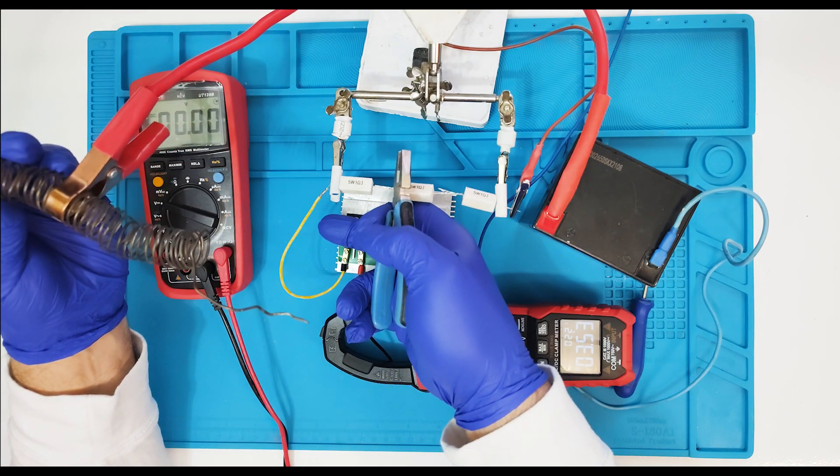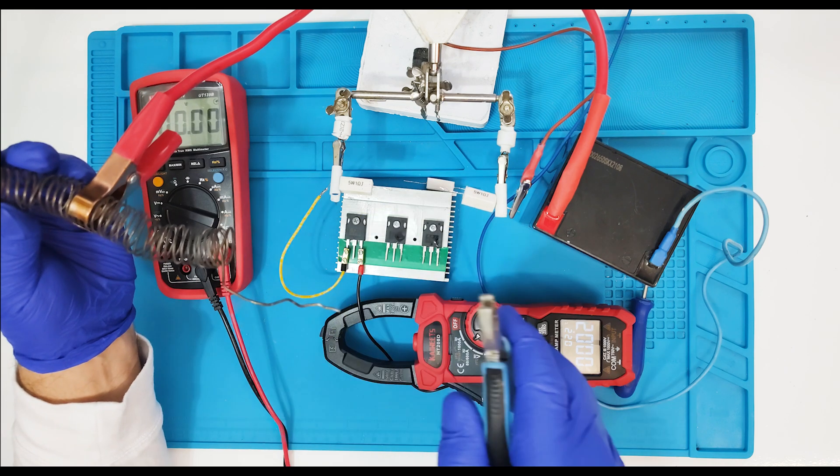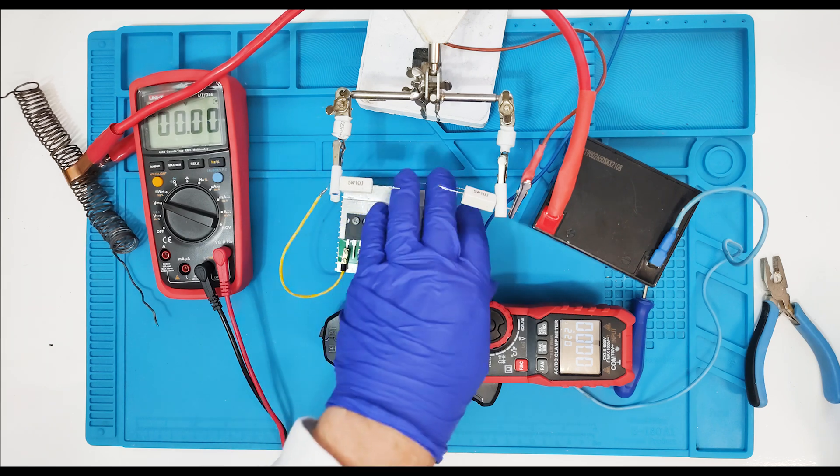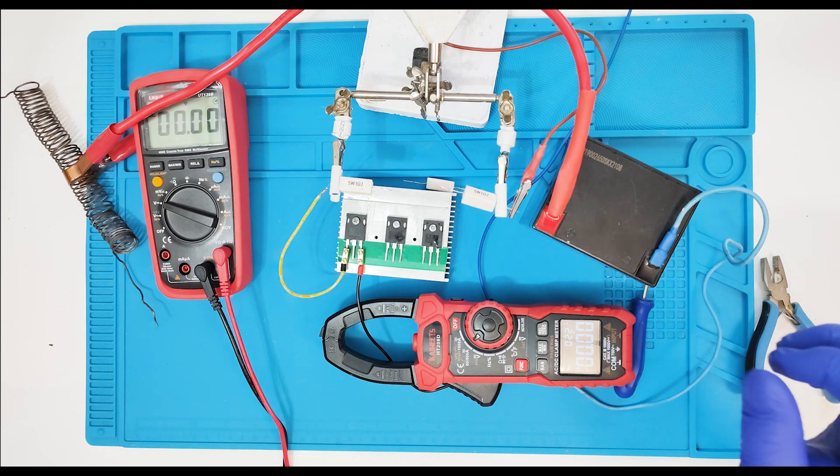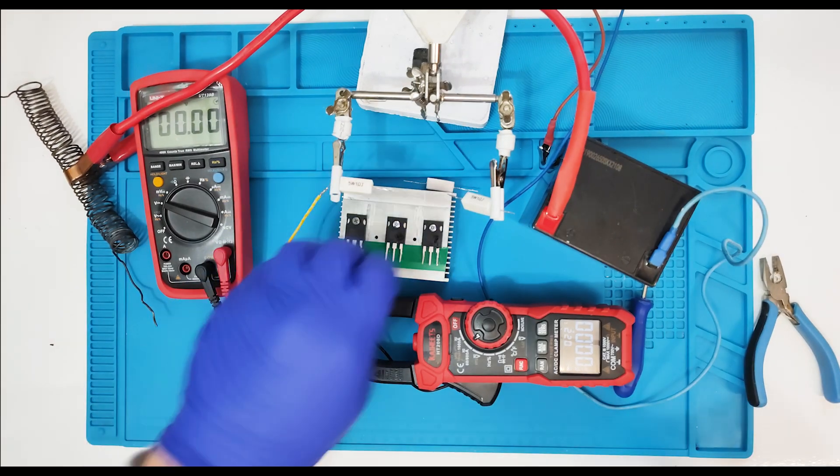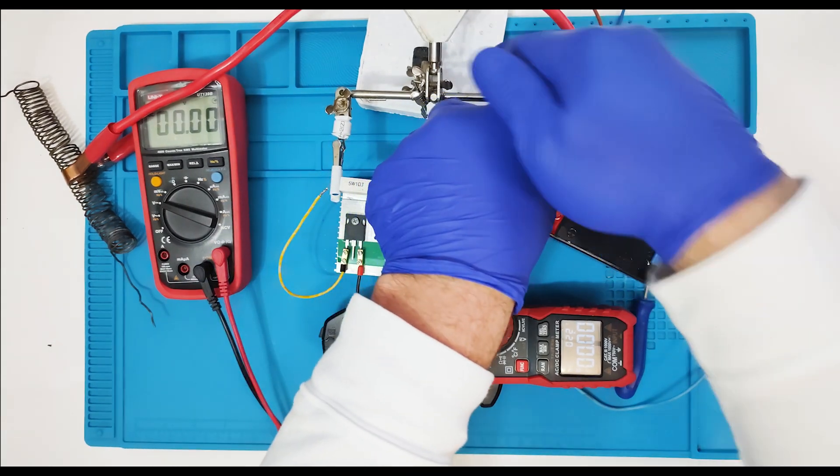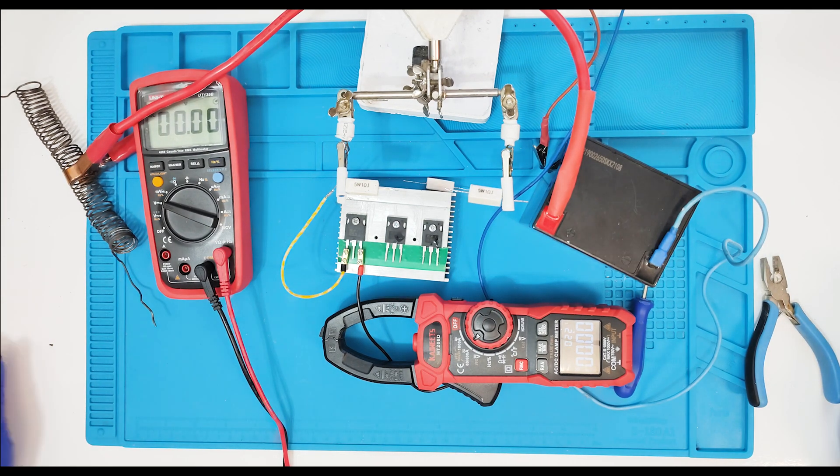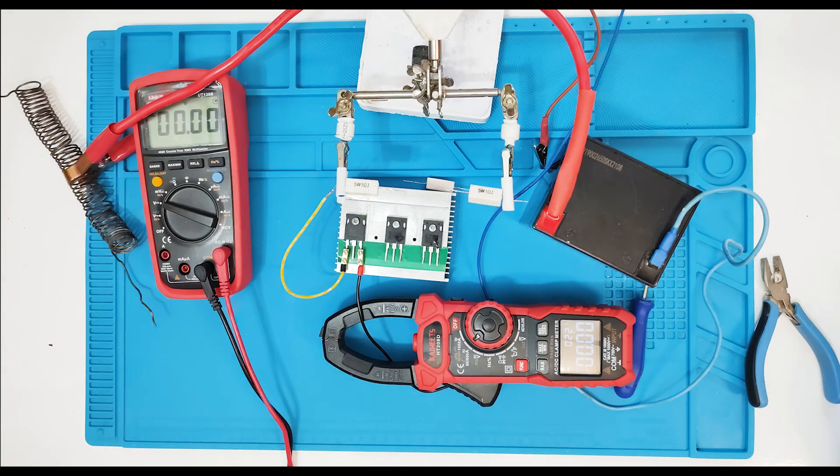Let's try to increase the load and look at the ampermeter. Oops! The current 3.5 A on the base is warmed up the resistance and they desoldered. We need a couple of seconds to fix it and then we try to go far.